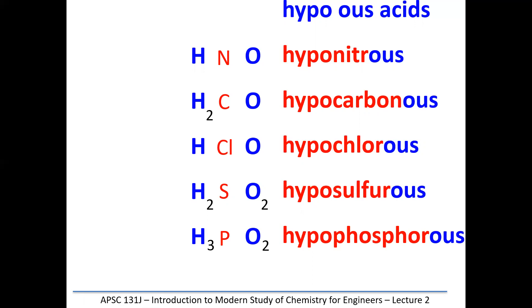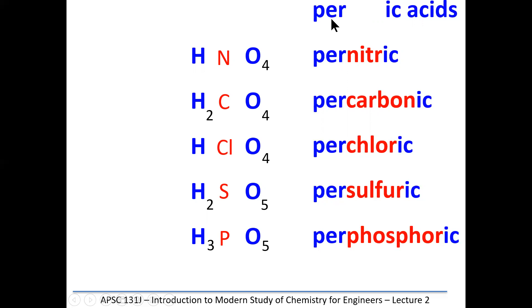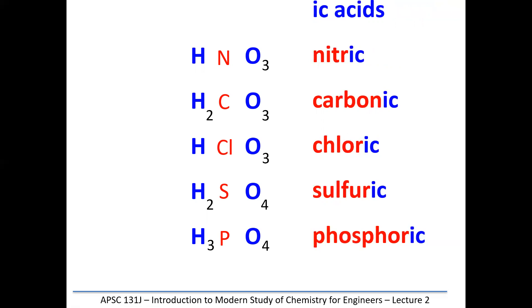The prefix 'per' in chemistry means add an oxygen. So if nitric acid is HNO₃, pernitric acid is HNO₄. That gives us five new per-acids: pernitric, percarbonic, perchloric, persulfuric, and perphosphoric. So we have four families of five acids — that's 20 different acids, all derived from our ho-ho-ho method.